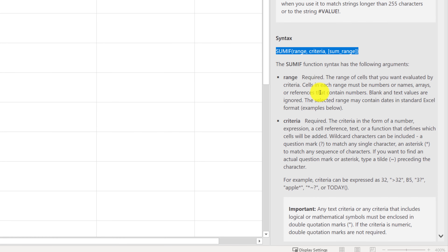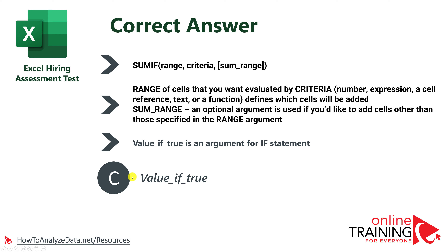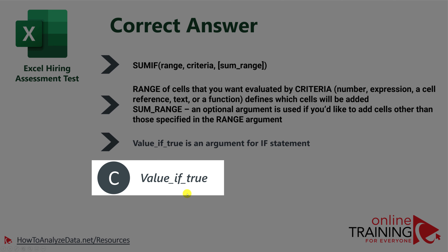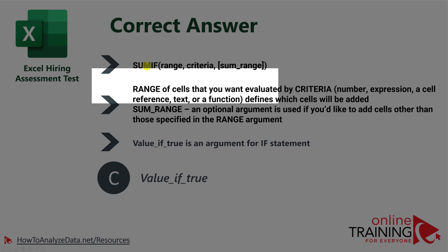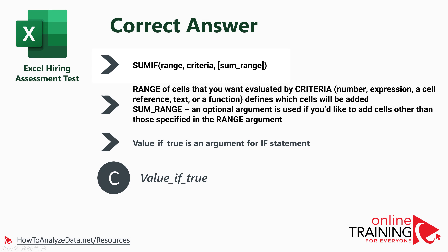Read some additional information about the function. Because the question is asking which of the following is NOT an argument, the correct answer is C — value if true — which is not part of the syntax of the SUMIF formula, which only contains range, criteria, and sum range arguments.